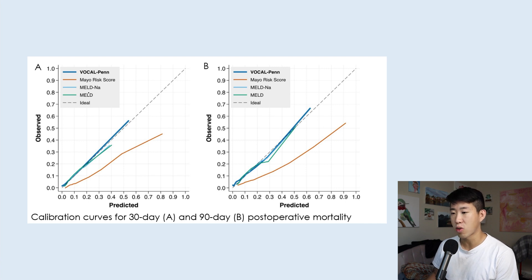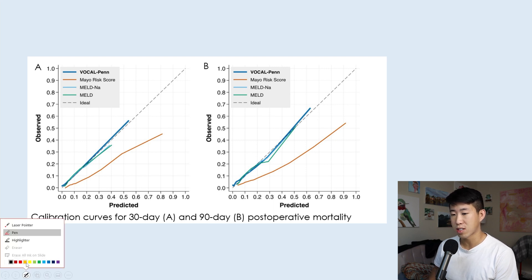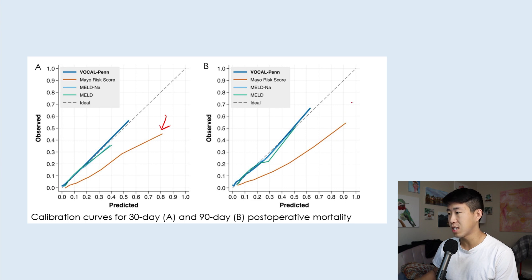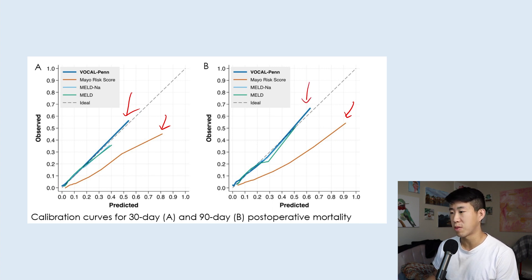In these graphs, the dotted line represents the observed amount of mortality after surgery, and the predicted line is illustrated by the different colors. The Mayo risk score significantly over-predicted mortality, whereas the VocalPenn score was actually very closely correlated with the observed amount of mortality.